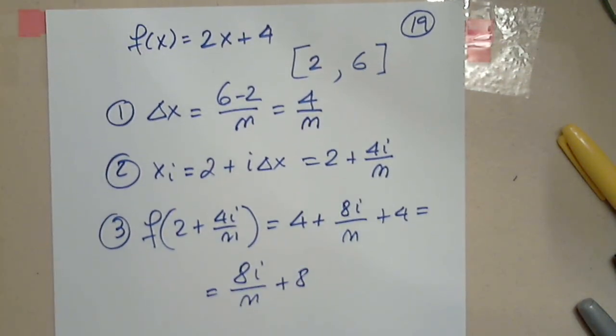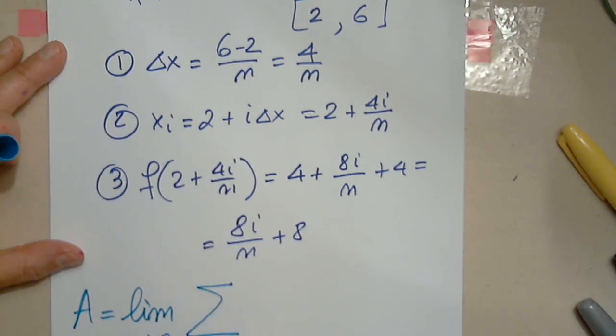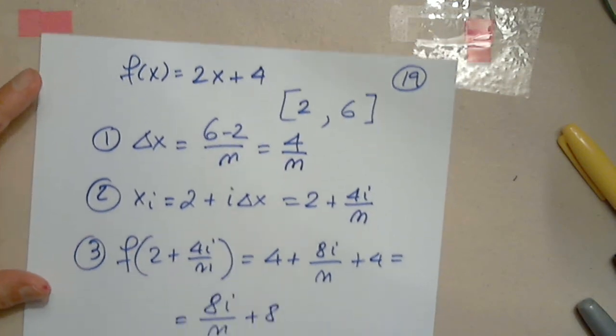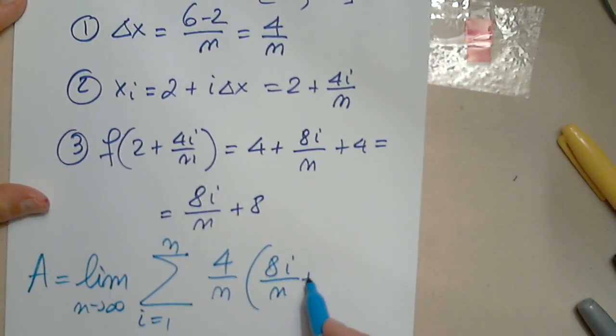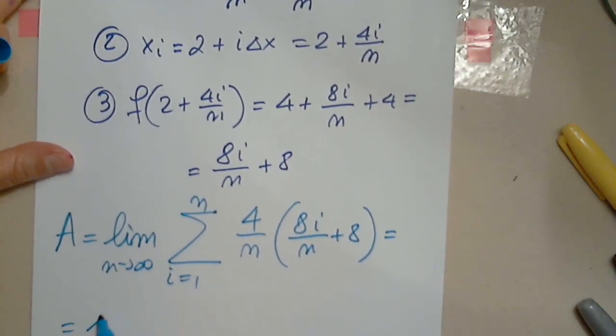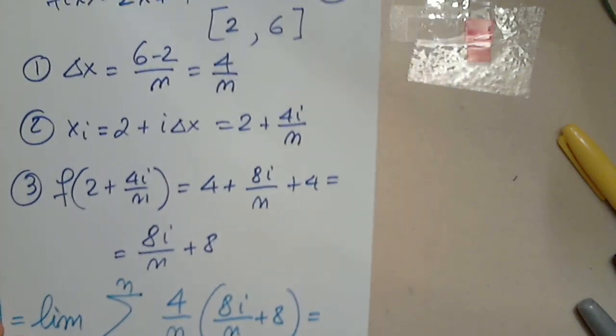After the three preps, I'm ready to find the exact area. Limit as n approaches infinity from the summation notation from i equals 1 through n. First, delta x, 4 over n, multiplied by f of x_i. Of course, I'll put the constant in front, it doesn't depend on i, it's always the same. So 4 over n. Now I apply the summation to the first term plus the summation to the second term.